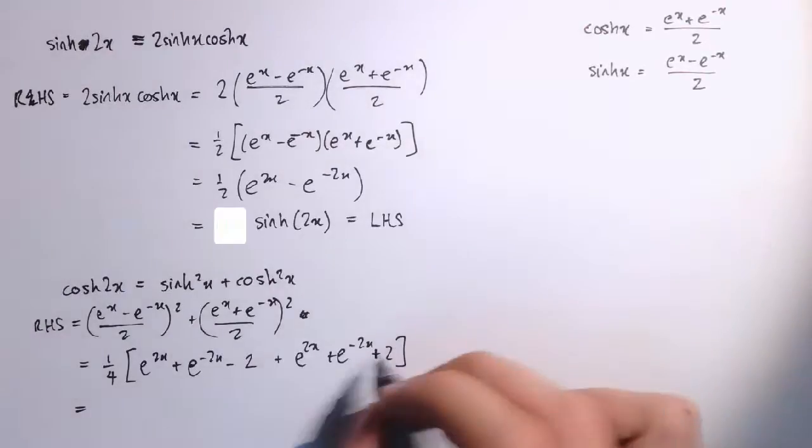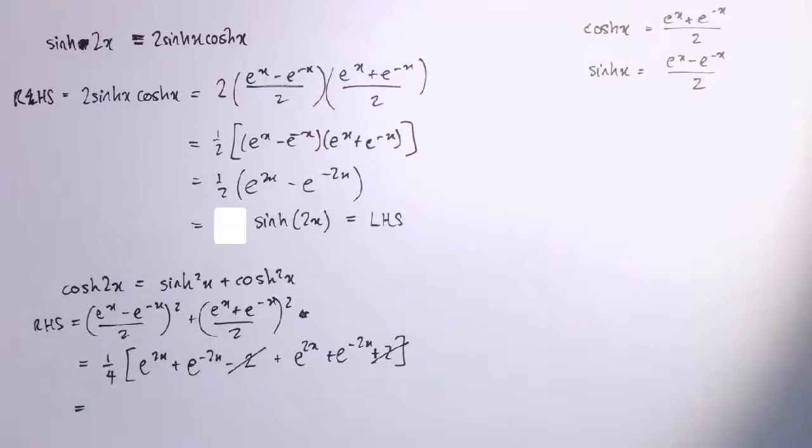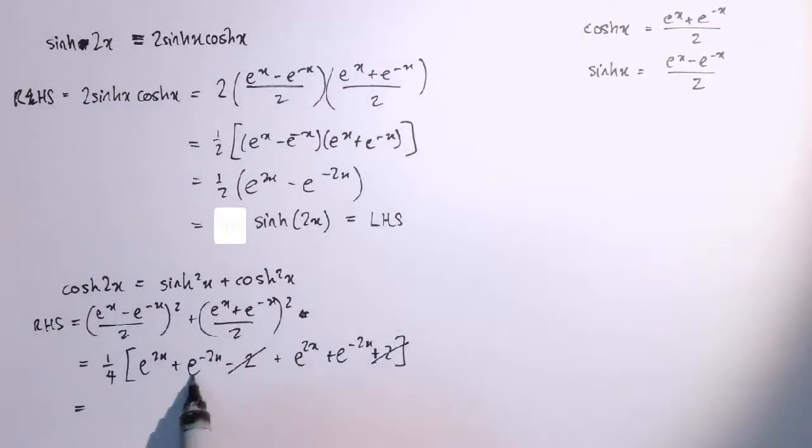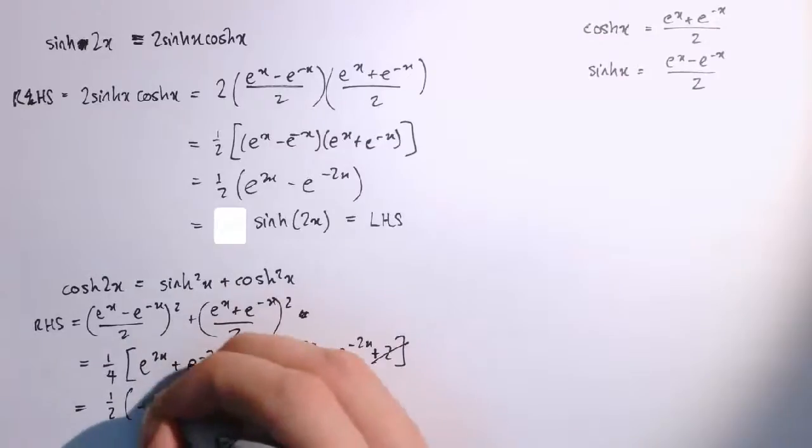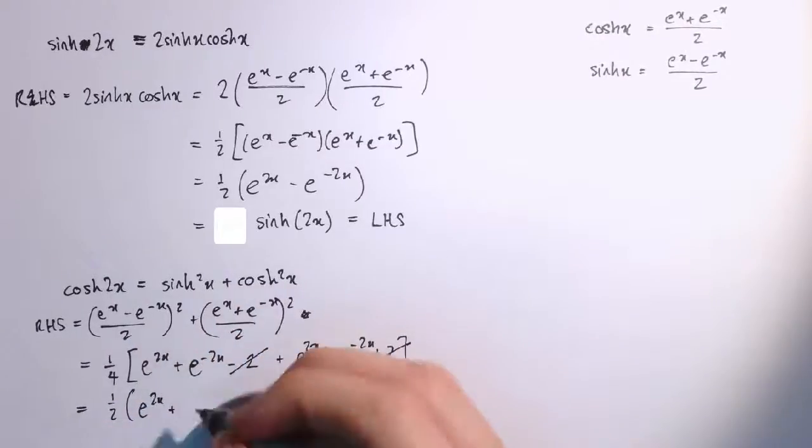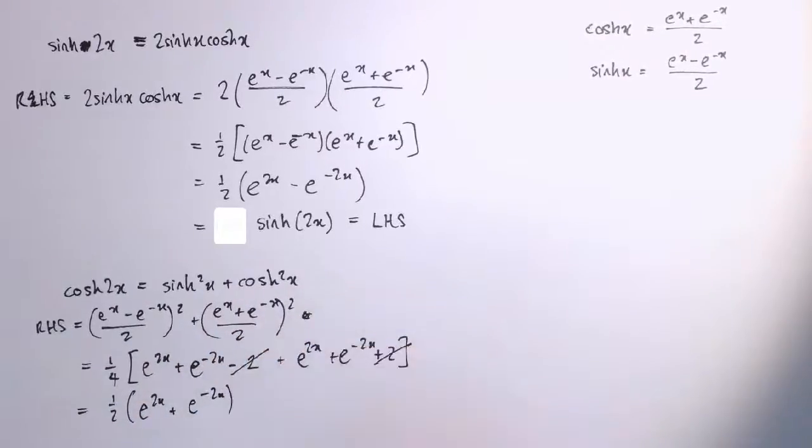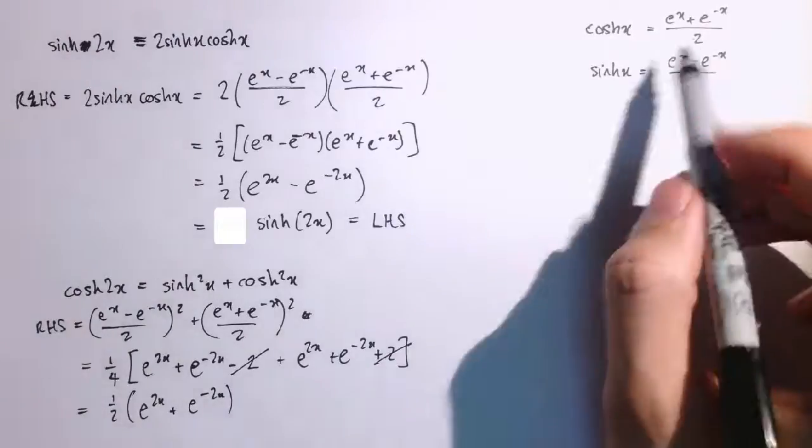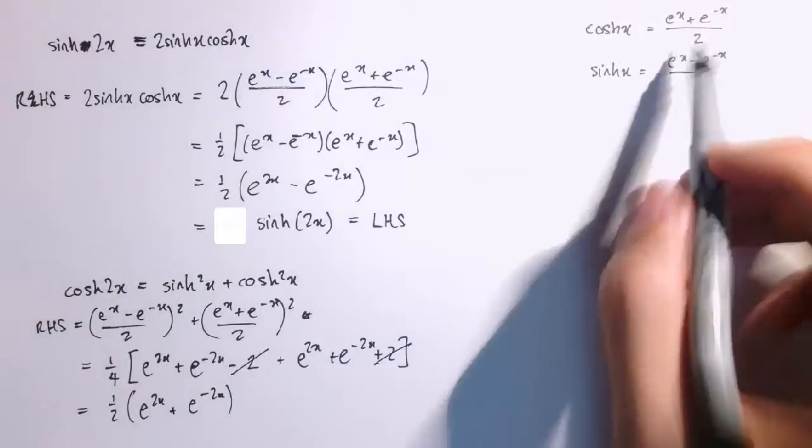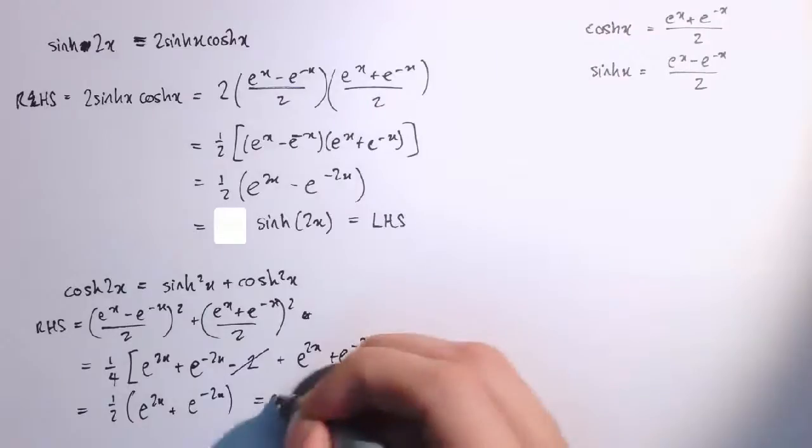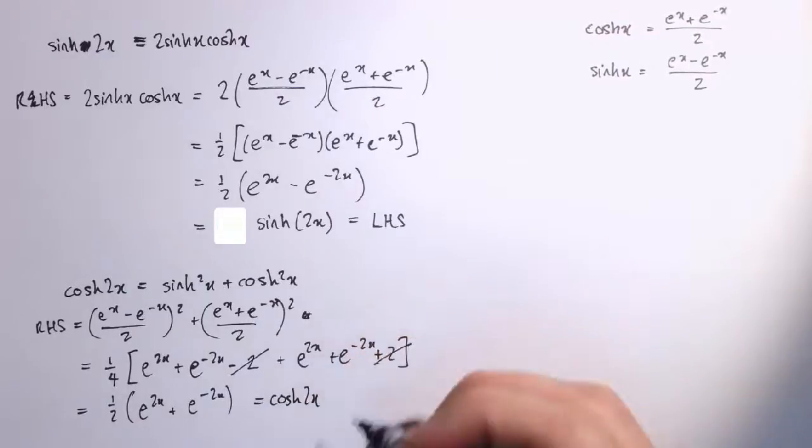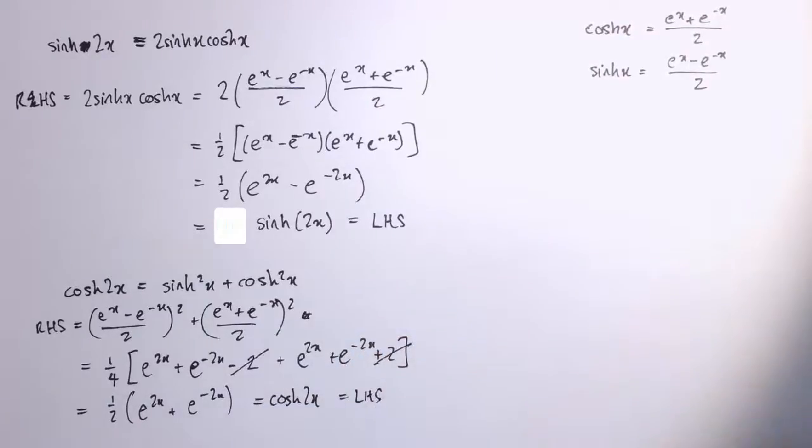So I've got a plus 2 and a minus 2, and they cancel out, and I've got two lots of e to the 2x and two lots of e to the minus 2x times by a quarter, so overall I've got one-half e to the 2x plus e to the minus 2x, which is exactly the formula for cosh with 2x substituting to it, so I've got that that is equal to cosh of 2x, which is the left-hand side, so I've proven that identity.